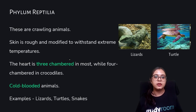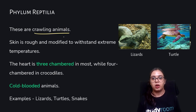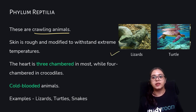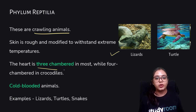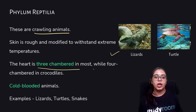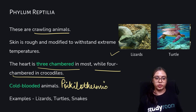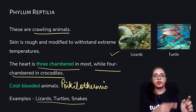Reptilia are crawling animals. Their skin is rough and modified to withstand extreme temperatures, which is why many species are found in desert regions. The heart is three-chambered, with the exception of crocodiles, which have a four-chambered heart. These are also cold-blooded (poikilothermic) animals. Examples: lizards, turtles, and snakes.